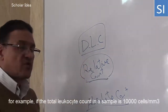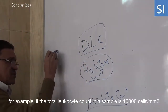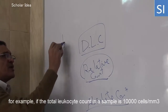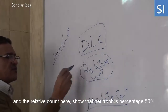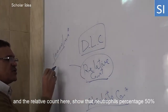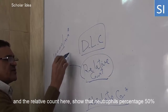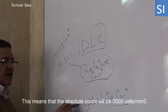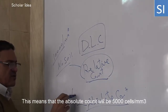For example, if the total leukocyte count in a sample is 10,000 per cubic millimeter, and the relative count shows neutrophils at 50 percent, then the absolute count will be 5,000 per cubic millimeter.